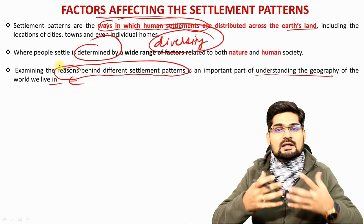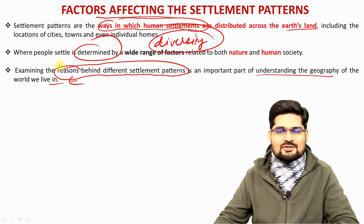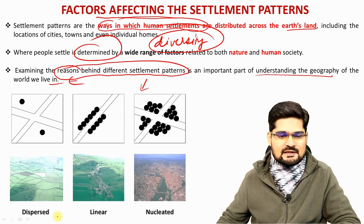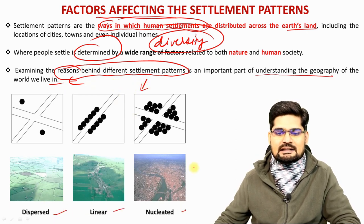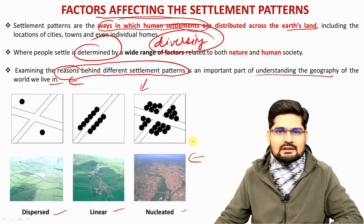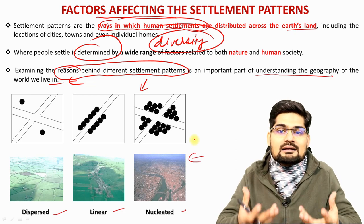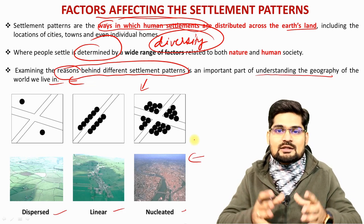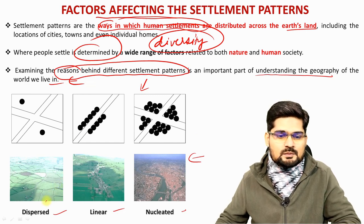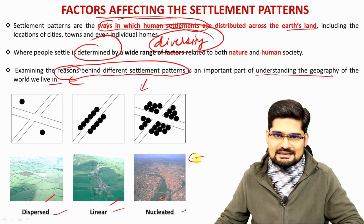Examining the reasons behind different settlement patterns is one of the important aspects to understand the geography of the world we live in. The kinds of patterns we observe in space — dispersed, linear, nucleated — are settlement pattern types which we will learn about in classification lectures to come. But why are these located in particular ways in particular areas? What factors make them dispersed, linear or nucleated? That is what we explore today.